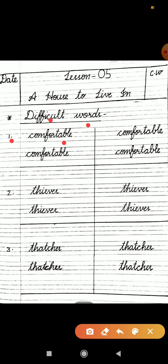After making proper headline, you will start to write difficult words. First is comfortable. You will write it four times. Its spelling is C-O-M-F-O-R-T-A-B-L-E. Then by leaving one line you will write second, that is Thieves, T-H-I-E-V-E-S. You will write it also four times.